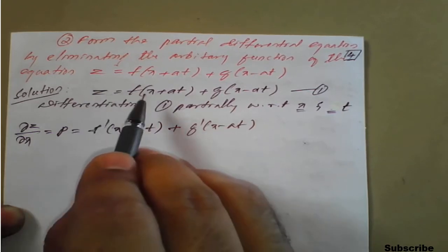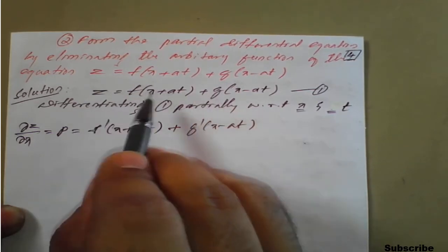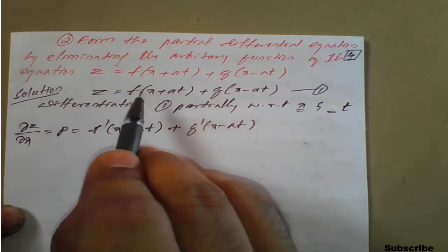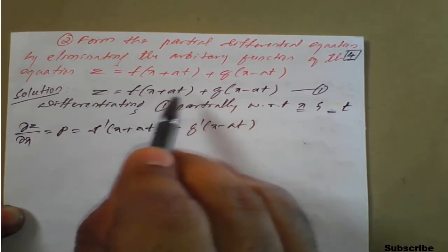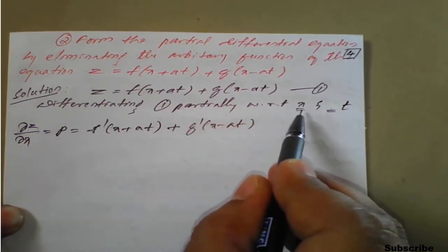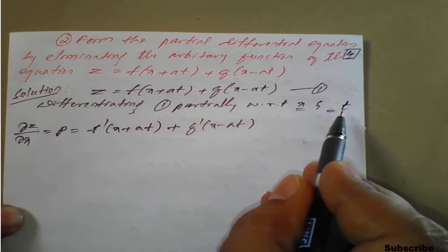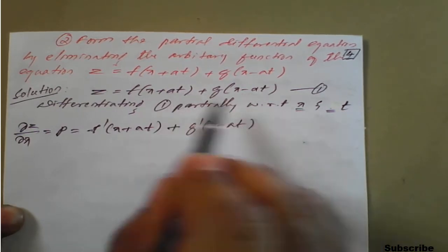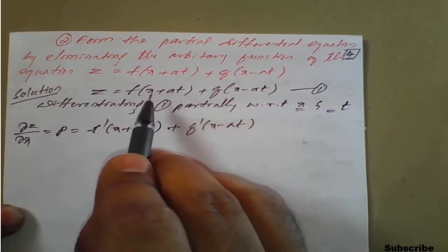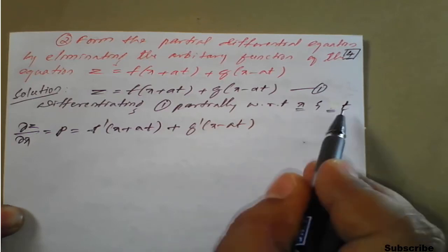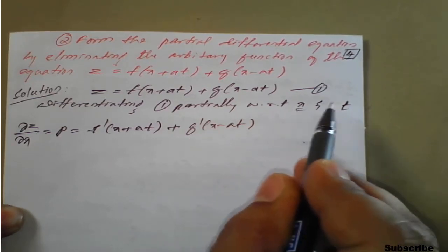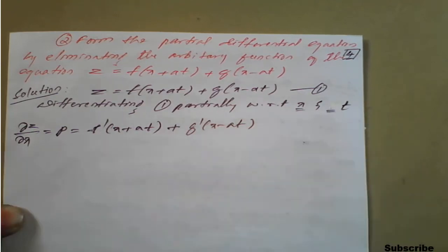The two independent variables in this problem are x and t, not x and y as in the previous example. There is no y function here, so we differentiate with respect to x and then with respect to t. It is important to check which are the two independent variables before proceeding.